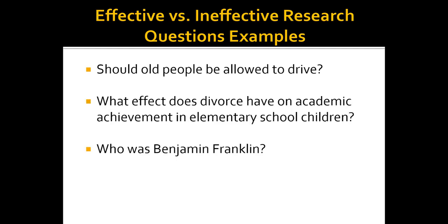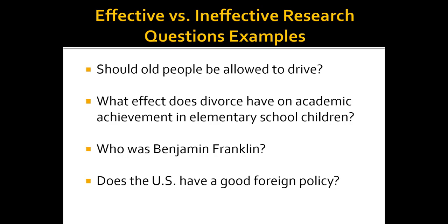Some examples of effective and ineffective research questions. 'Should old people be allowed to drive?' — that's ineffective; 'old' is very subjective. 'What effect does divorce have on academic achievement in elementary school children?' — that's pretty effective. It's specific, and it doesn't say 'what negative effect,' because as soon as you insert a word like negative or positive, you're already biasing yourself in one direction or the other. You want to avoid biased language in your research question, otherwise you'll end up with a biased thesis. It says 'academic achievement' — you could maybe be more specific, like 'mathematical ability.' It says 'elementary school children,' not just 'children.' 'Who was Benjamin Franklin?' is highly ineffective — we know who Benjamin Franklin is; there are probably thousands of full-length biographies written about him, so it's much too broad.